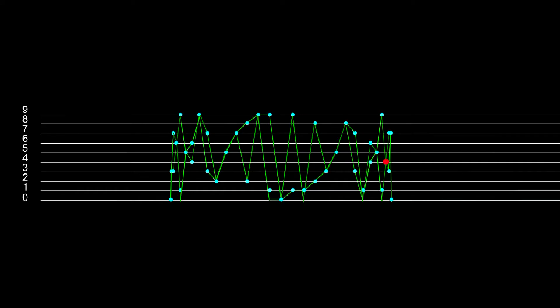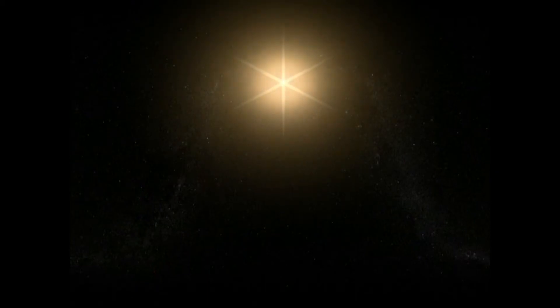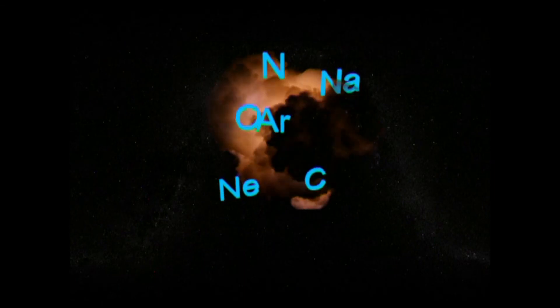When scientists study the universe, they see that in the beginning there was only hydrogen. This hydrogen somehow coalesces to form helium, and together they ignite into a star. Inside the nuclear furnace of a star, these simple hydrogen and helium elements are fused together to form all the other heavier elements like carbon and iron.